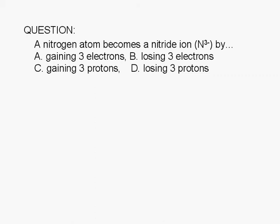A nitrogen atom becomes a nitride ion by: A, gaining three electrons; B, losing three electrons; C, gaining three protons; or D, losing three protons.